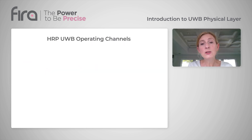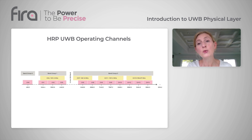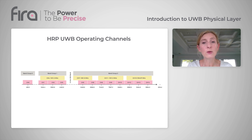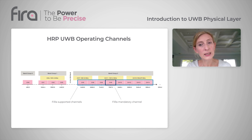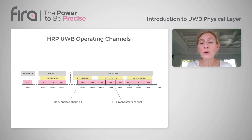The UWB standard defines operation on a spectrum from 500 megahertz to 13 gigahertz. But the FIRA consortium supports only band group 2, with 500 megahertz channels numbered 5 to 14, with center frequencies from 6.4 to 9.9 gigahertz. Channel 9, with center frequency at 7.9 gigahertz, is the only mandatory channel as it offers the greatest worldwide regulatory acceptance.